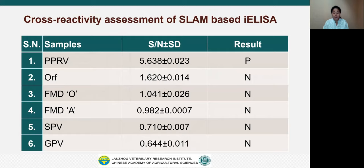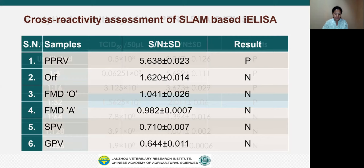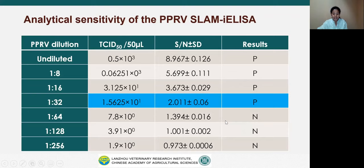The specificity of the ELISA was evaluated by cross-detection of other viruses that infect the epithelium or mucosa in sheep and goats. We tested for ORF virus, FMD virus strains O and A, capripox virus and goatpox virus, and no cross-reaction was observed, indicating the assay was specific for PPRV. For analytical sensitivity, serial dilutions of PPRV ranging from 0.5×10³ to 1.9×10⁰ TCID50 were tested in replicates. The dynamic detection range spans from 0.5 to 1.56×10 TCID50 per 15 microliters with a detection limit at a 1:32 dilution ratio.